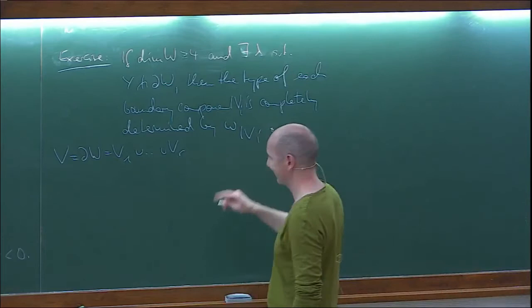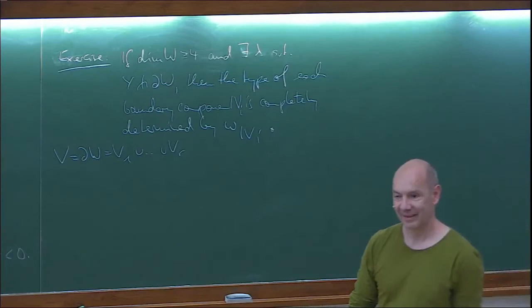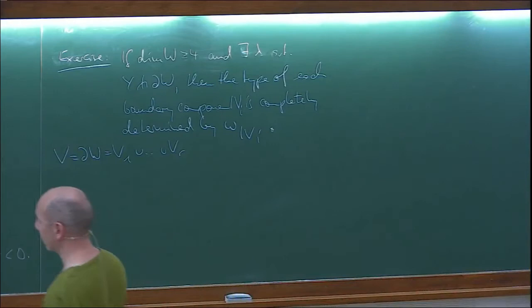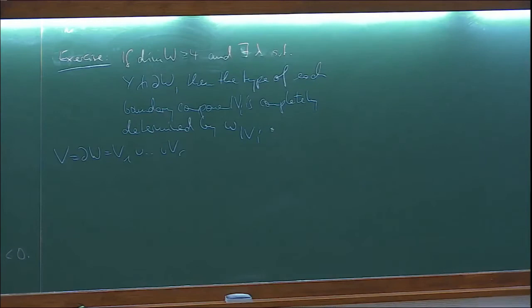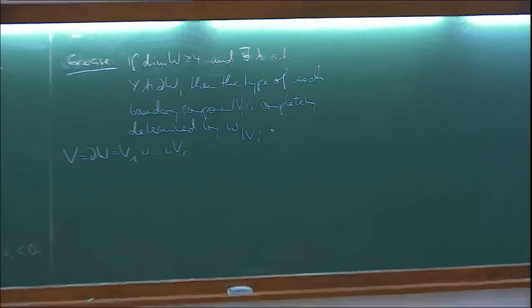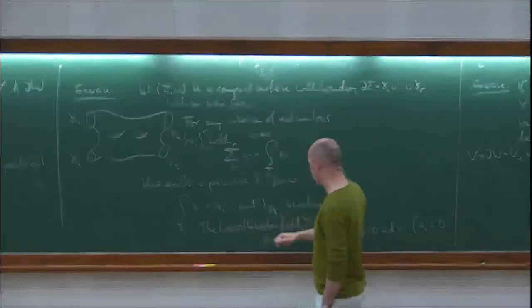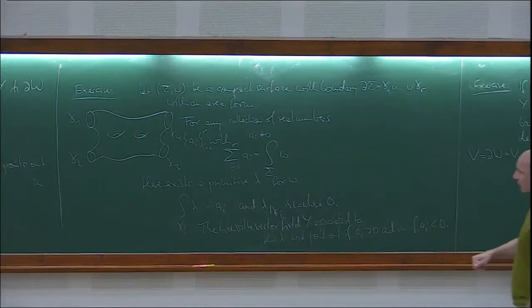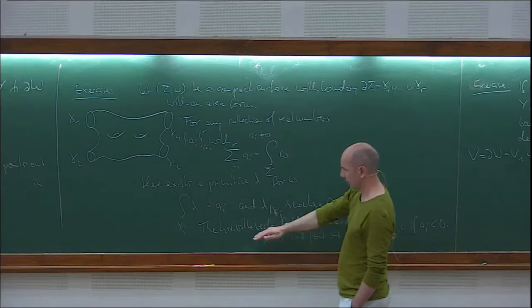If you get stuck, ask me and I'll give you a hint. The main statement is that I can find this lambda in such a way that if I take the vector field with respect to this lambda, I can find lambda with this property, and then once I have the lambda and build the vector field, it automatically will satisfy this. The main part is constructing the lambda. Once you have the lambda with these properties, this basically follows from the definitions.